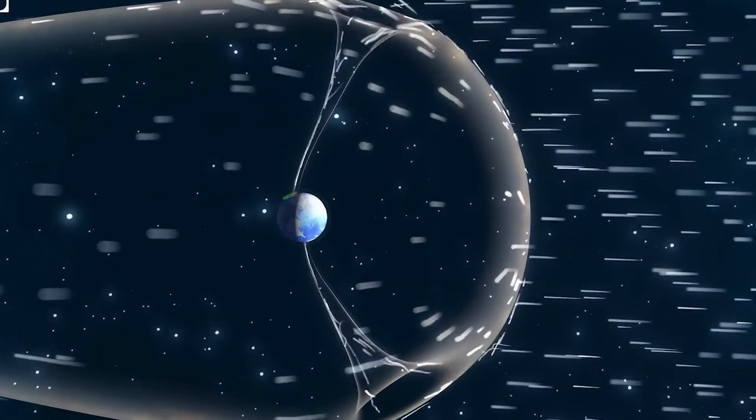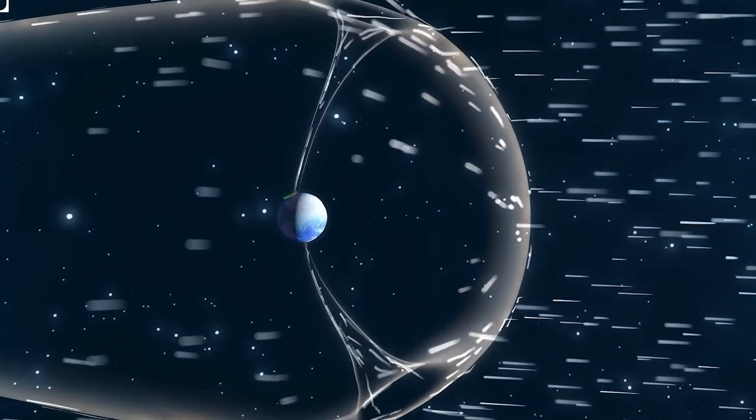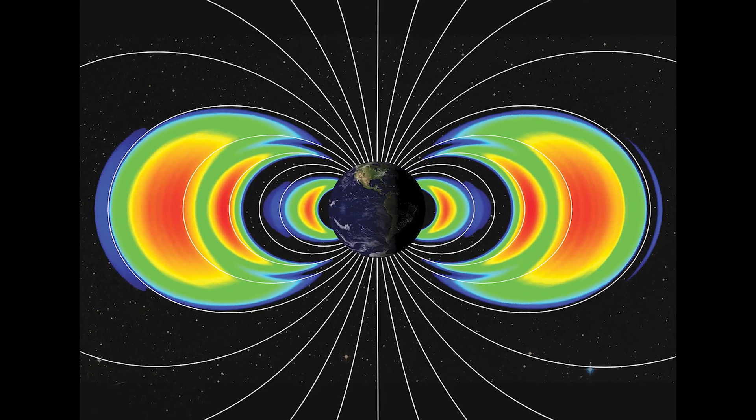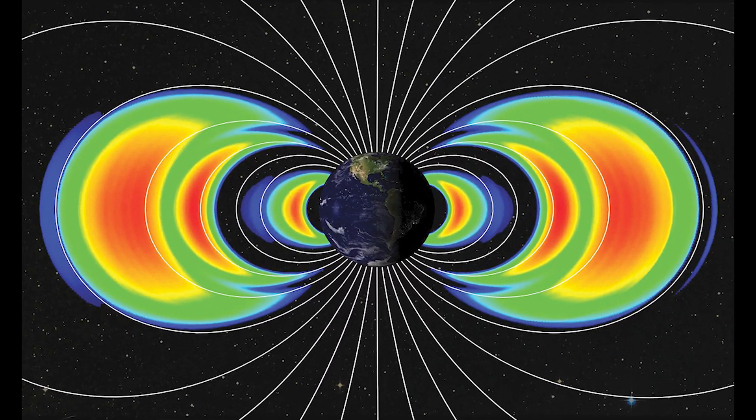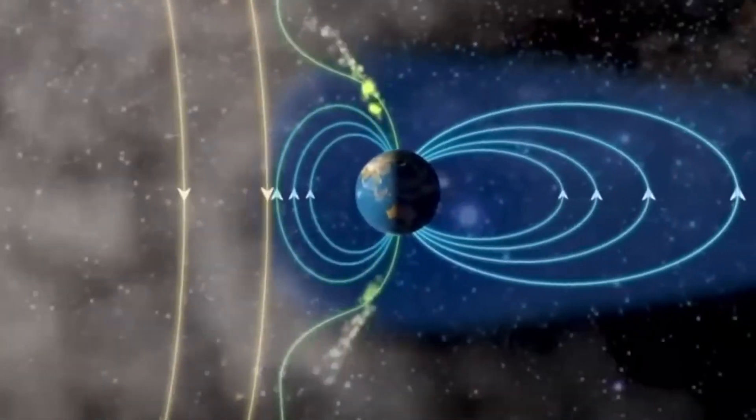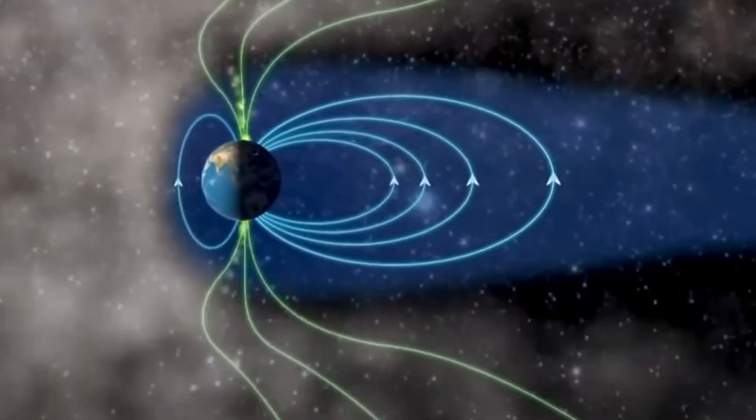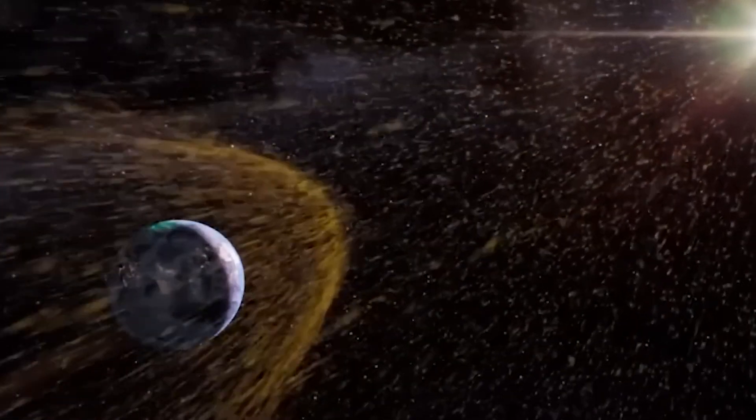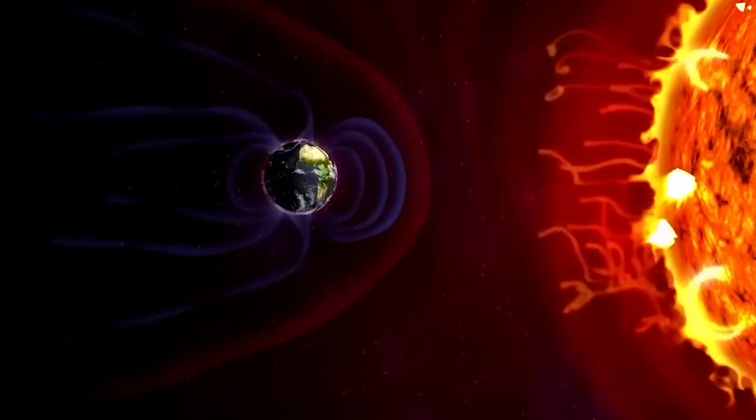Our Sun loves shooting charged particles and plasma, which heads straight for Earth. Lucky for us, we have these nifty belts called the Van Allen belts that usually trap those particles and keep them at a safe distance. But the Van Allen belts can get supercharged when the Sun becomes rowdy and throws an intense solar storm our way.